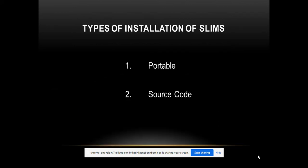There are two types of installation of SLIMS: portable and source code. With portable downloading, you can use SLIMS only on the computer where it is downloaded. With source code, you can use it on the cloud and for networking as well. Today we will learn how to download and install only portable SLIMS. In the next video we will cover source code installation.